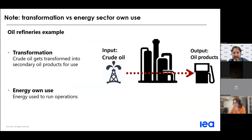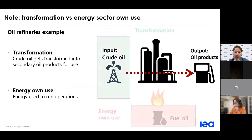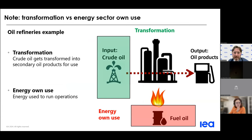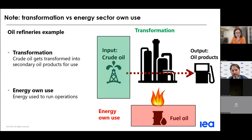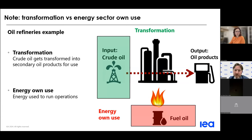An important concept is the distinction between transformation and energy industry own use. In an oil refinery, crude oil is transformed into secondary oil products such as gasoline — crude oil is the transformation input and oil products are the transformation output. However, the refinery also uses energy to support its own operations, such as lighting and heating. This fuel use is not considered a transformation input; it is instead categorized separately as energy industry own use. In an extended energy balance, it can appear that some flows are duplicated — two flows for refineries, two for blast furnaces — but they are not duplicated: one refers to transformation and the other to energy industry own use.